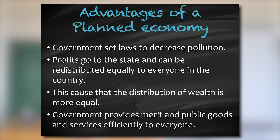These goods and services are supplied by the government, and they supply them efficiently. For example, free universities are an example of a merit good. There are parks and recreation centres, which are examples of public goods, which the government also provides in a planned economy. These are all advantages of a planned economy.